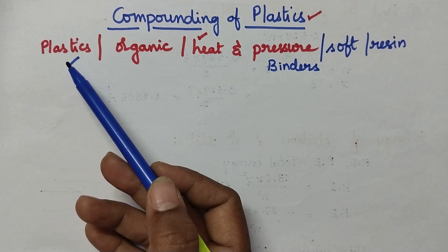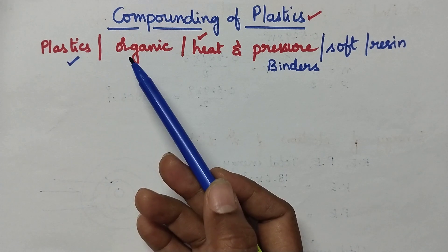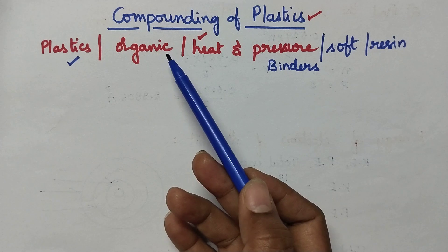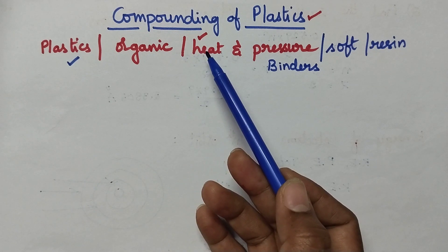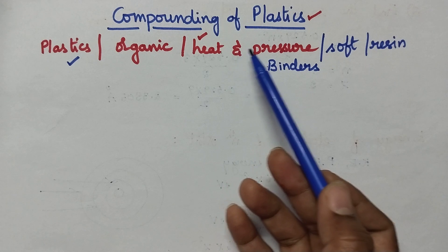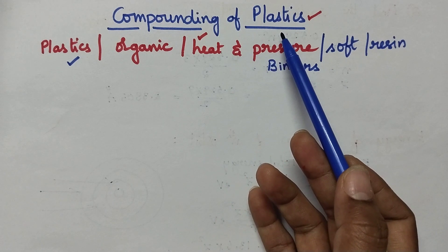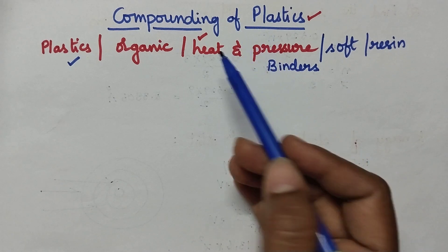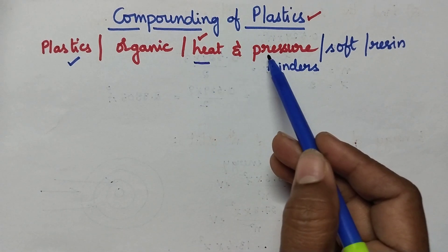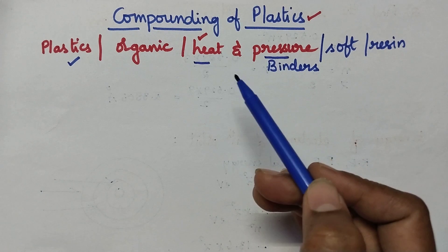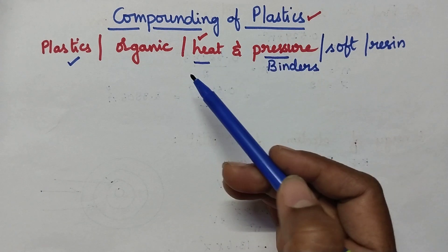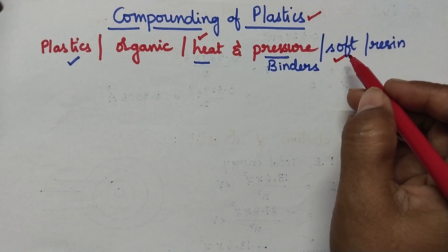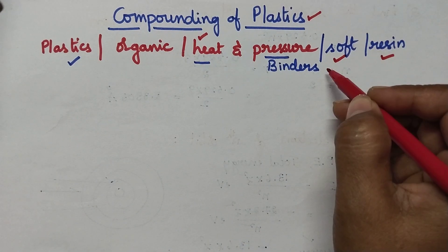Plastics can be defined as high molecular weight organic polymers which can be molded to a desirable shape by the application of heat and pressure. Plastics can be molded to any desirable shape by the application of heat and pressure, but initially the plastics are soft in nature. So we can call raw plastic as a resin or binder.